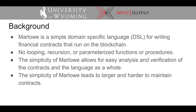Let's go over some background on Marlowe. Marlowe is a simple, domain-specific programming language for writing financial smart contracts, specifically targeting execution on the blockchain. There is no looping, recursion, or parameterized functions or procedures in Marlowe. The simplicity of Marlowe allows for easy analysis and verification of the contracts, and Marlowe itself has been formalized in the Isabel Interactive Theorem Prover. The downside to the simplicity of Marlowe is that contracts quickly become large and hard to maintain.